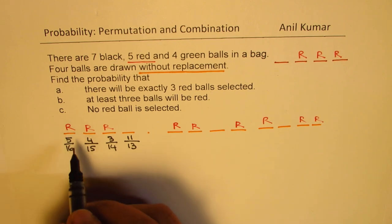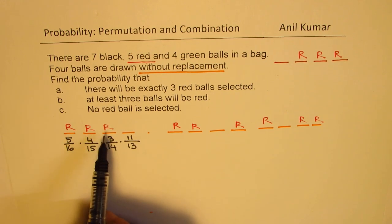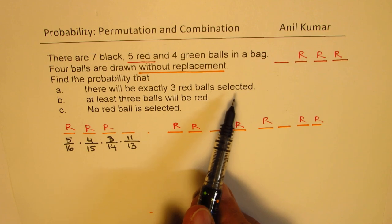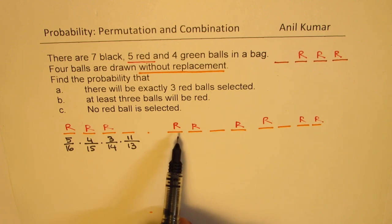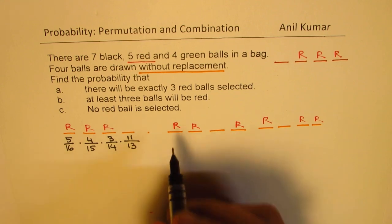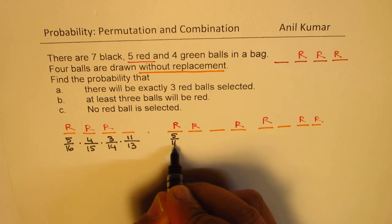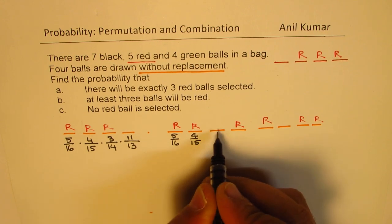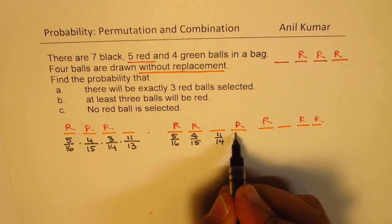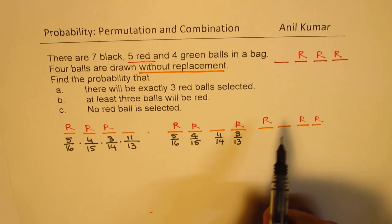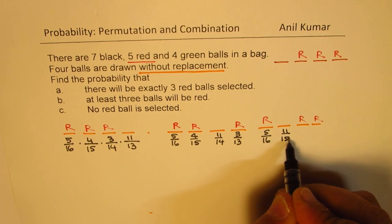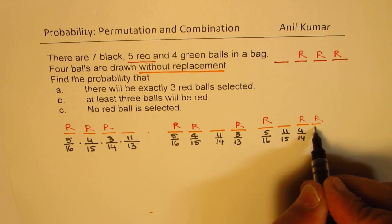In the very first case, the product of these gives us the probability of getting the first 3 red and not the fourth one — exactly 3 red balls selected. In the second case, we have 2 red balls, then a non-red ball, then a red ball. The probability of getting the first red is 5 out of 16, the second is 4 out of 15, the third is some other — 7 plus 4 equals 11, so 11 out of 14 — and then if we get red, the probability is 3 out of 13. For Case 3, we get the first red (5 out of 16), then not red (11 out of 15), then red (4 out of 14), then red (3 out of 13).